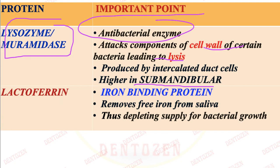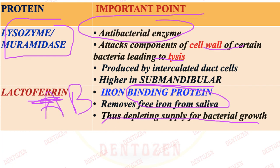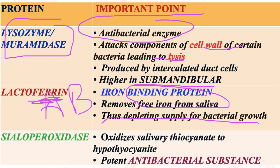Another important protein is lactoferrin. Ferrin means iron, so it is an iron-binding protein. It binds with free iron, and when it removes the free iron, bacteria cannot get it. It depletes the supply of free iron for bacterial growth, so bacteria will not grow. This makes it an anti-bacterial protein.